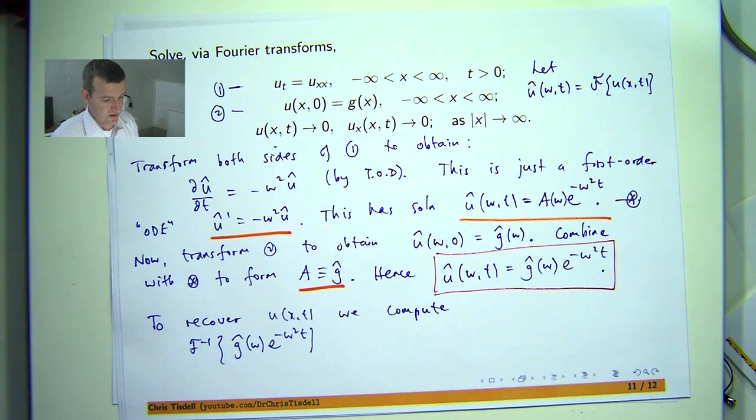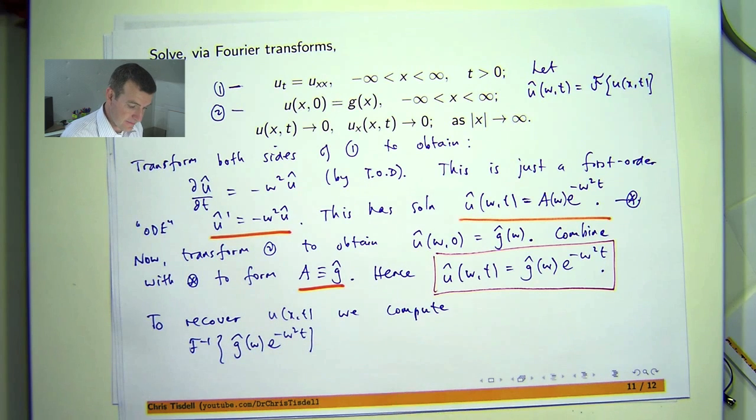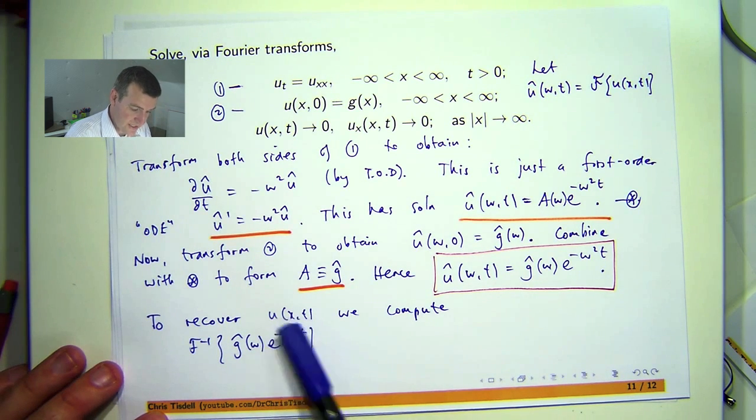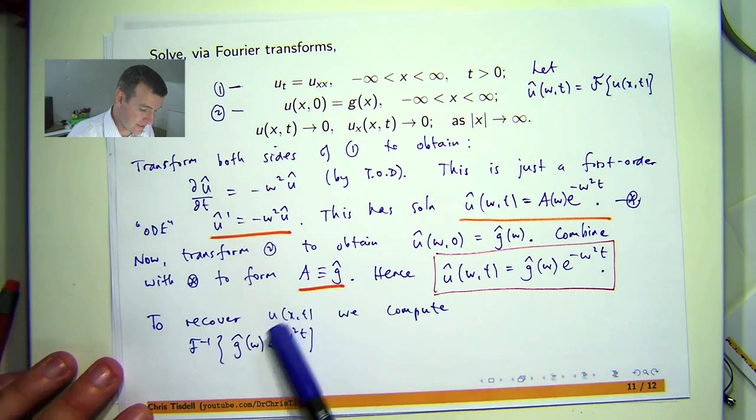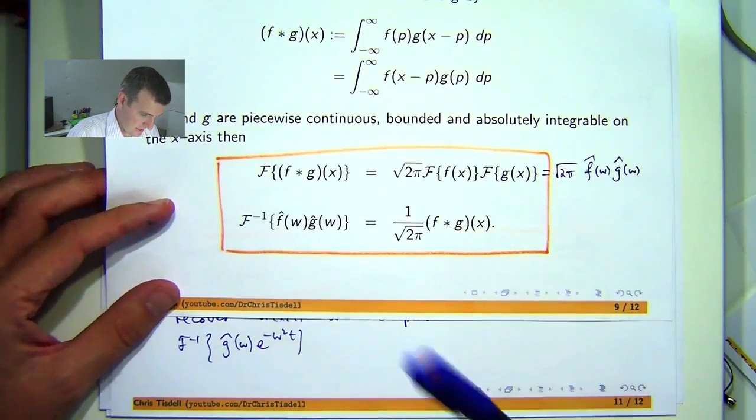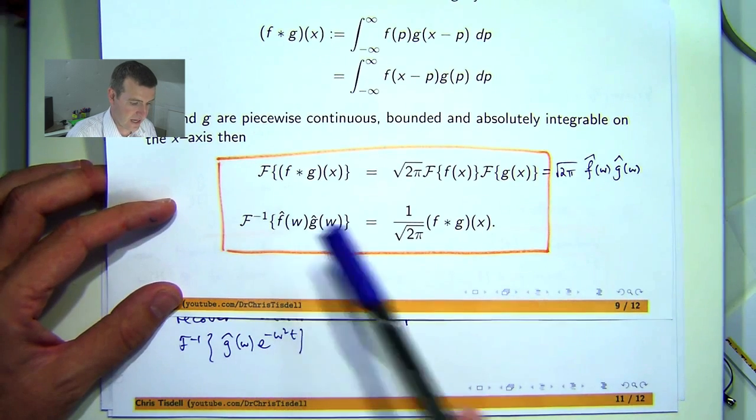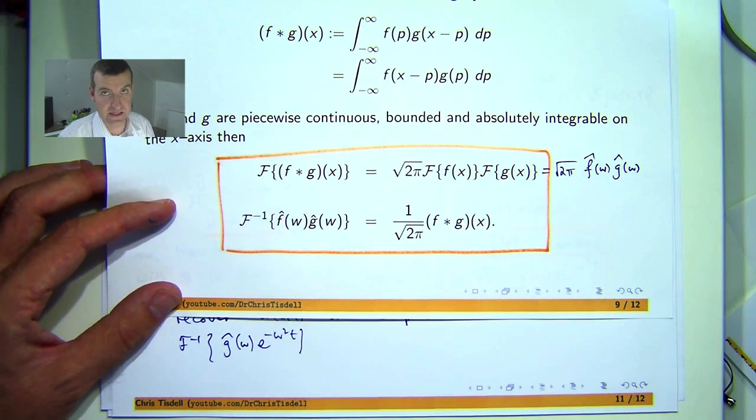So to recover u, we compute the inverse transform of this. So how do we do it? Well, essentially you can see that this is a product of two functions. And in particular, this essentially is a transform of something else. This is a bit like a Gaussian, and we know from the earlier videos that if you transform a Gaussian, you get another Gaussian. So we're essentially looking at this kind of situation here, with this playing the role of f-hat of w. Obviously, this is a function of two variables, this is a function of one variable, it doesn't matter that much.